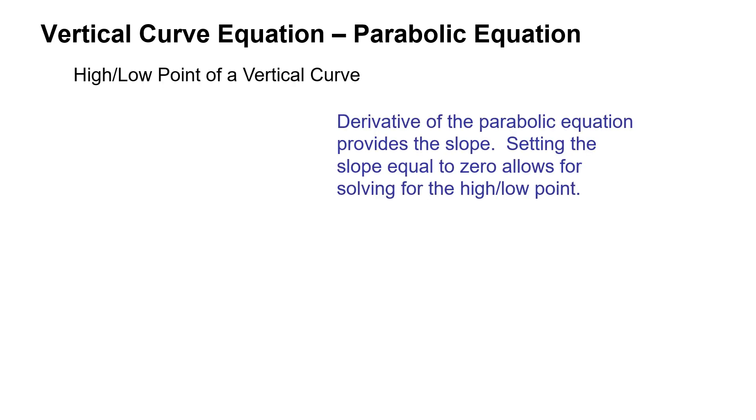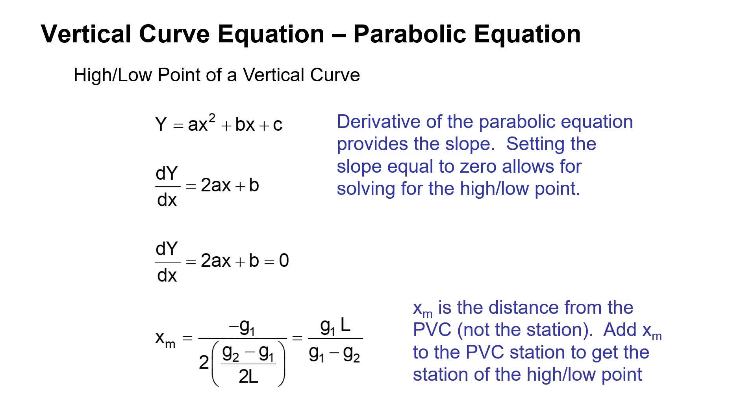We were asked to find the high point. So the equation for the high point of a vertical curve is based on the derivative of the parabolic equation, which will give you the slope. Setting that slope equal to zero allows it to solve for that high or low point.